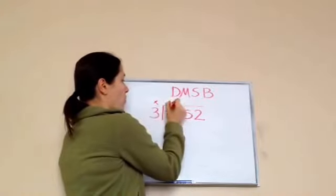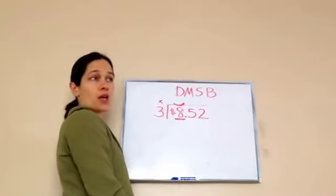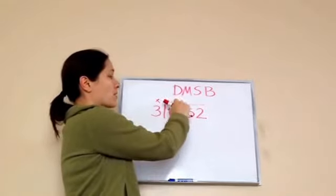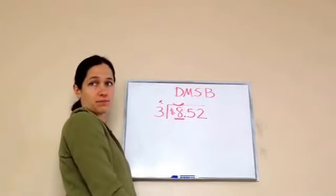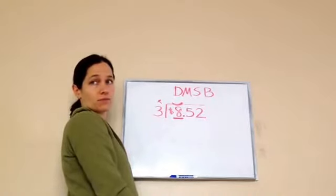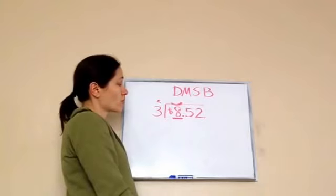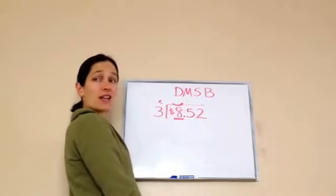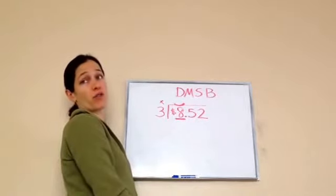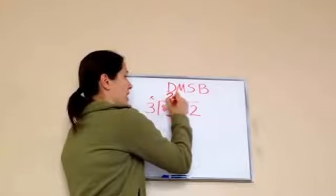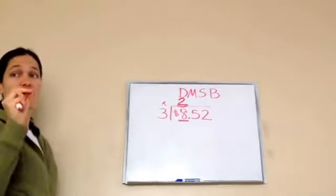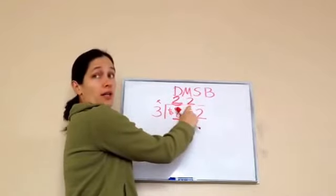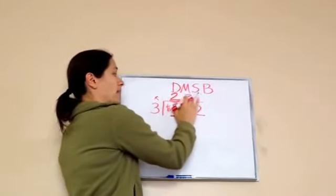We're going to ask ourselves: three times what equals eight? Sometimes we don't actually get a perfect number, but we have to get as close as we can without going over. So three times what will give us the closest number to eight? Three times two would be six — that's kind of close to eight. And three times three is nine, so we went over. So three times two. We're going to put a two here. I want you to pay attention to where I write my two because it's very, very important — I put it above the eight.